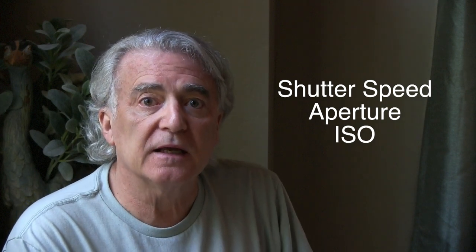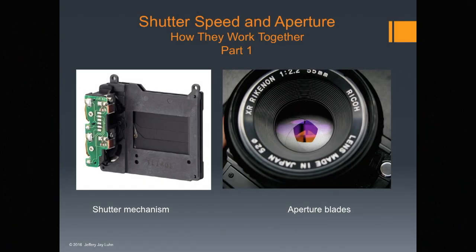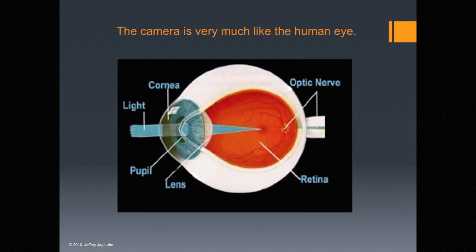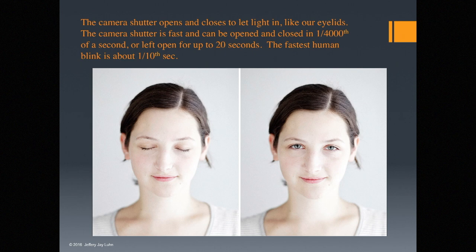We're going to see how all three work together in this lecture and in lectures that follow. The shutter controls the time that the camera is open to incoming light, and the aperture controls the flow of light that enters the camera. The camera is very much like the human eye. It has a lens in front that focuses the image, then the image hits the optic nerve, which is like the retina, and that translates the image to the brain. The camera shutter opens and closes to let light in, like our eyelids.